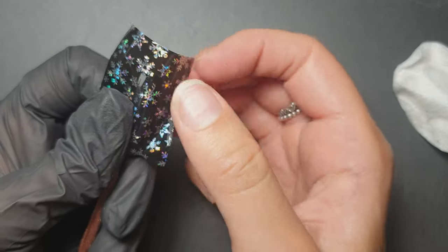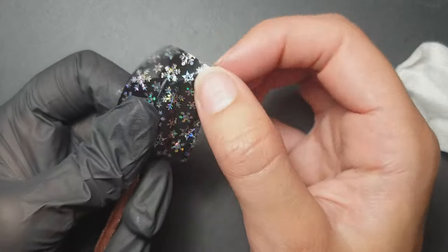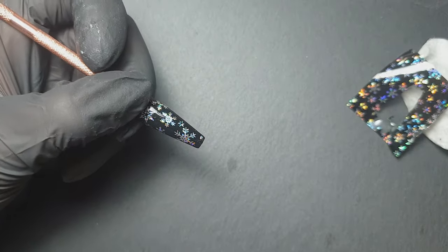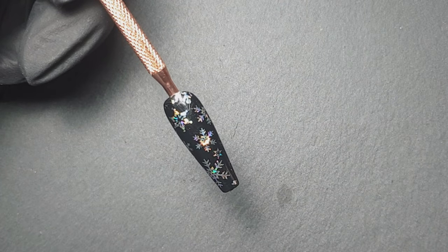If you do have any bits missing, like there's a part of the image missing, you can go in again and press it down. I just find it a bit easier with the full coverage ones to try and get it all done in one pull.